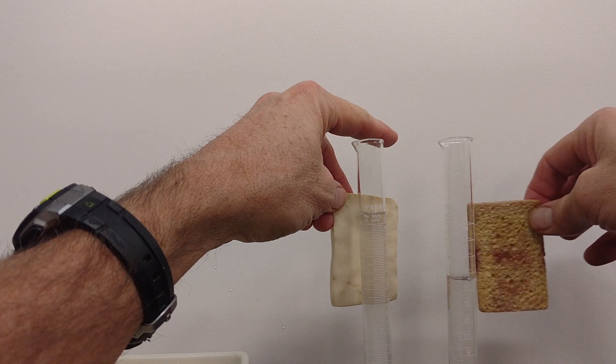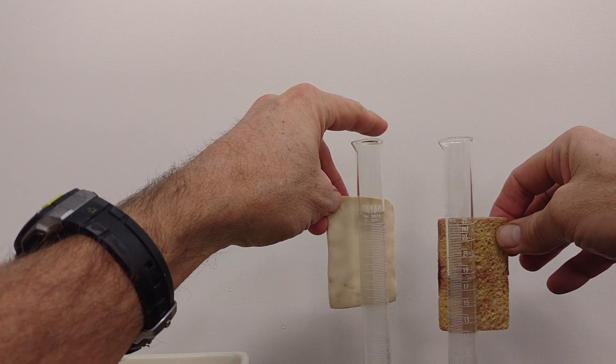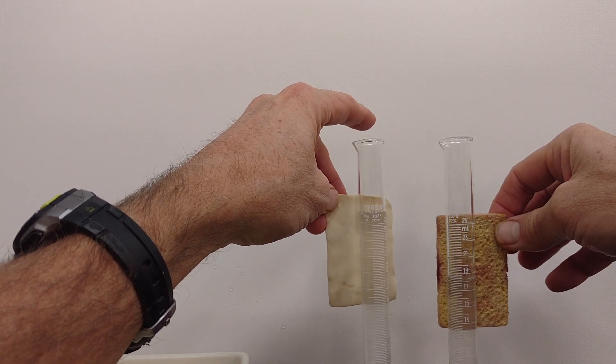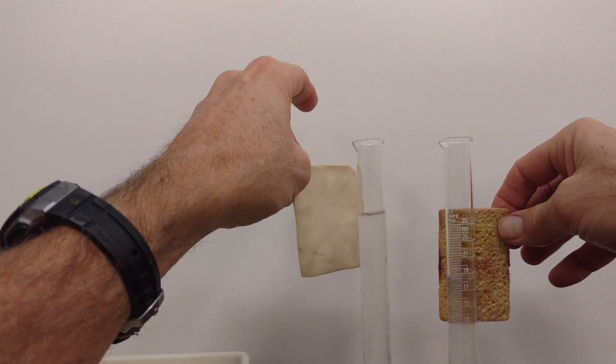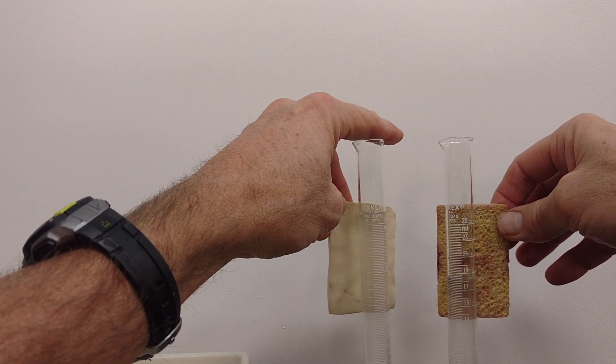About 18 milliliters or so of water on this side with the large pores, and maybe almost 26 milliliters in the case of the sponge with the small pores.